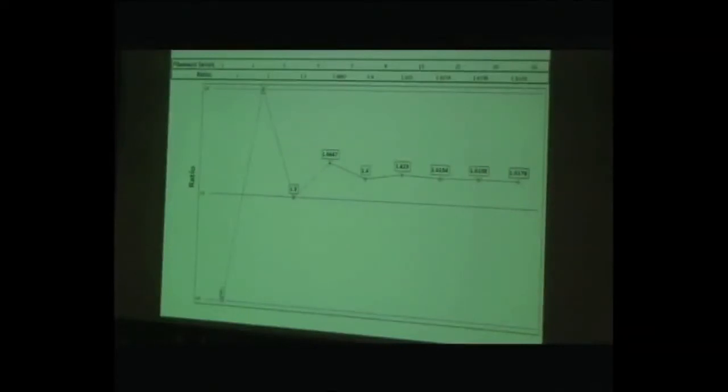The interesting thing about this series is that the further along you get, the more the ratio of the current number to the previous number tends towards a particular value, 1.618033 and so on. That has interesting properties itself. That is known as the golden ratio, or the golden section, or the golden mean.